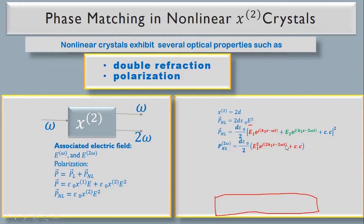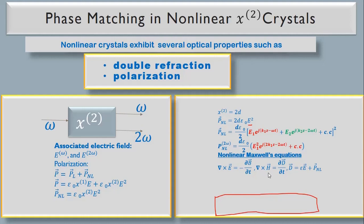From the squared field expression, the term in red ink generates a frequency at 2ω, while the rest generates at 4ω or ω. We only need the 2ω term for this lecture, so we won't compute the rest. Now let us look at the nonlinear Maxwell's equations and solve them to find the second harmonic generation of the χ² crystal.